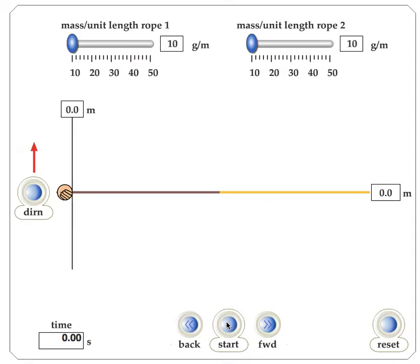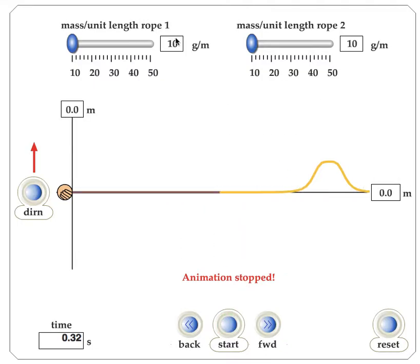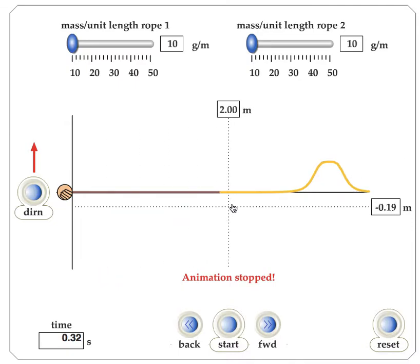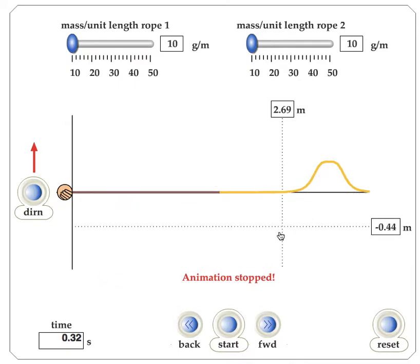So if I hit start, you can see here's one of the mediums, here's the other medium. If I hit start, you'll notice it just kept traveling through, because essentially it's the same medium — it's the same rope here and the same rope there — so the wave just travels straight through.